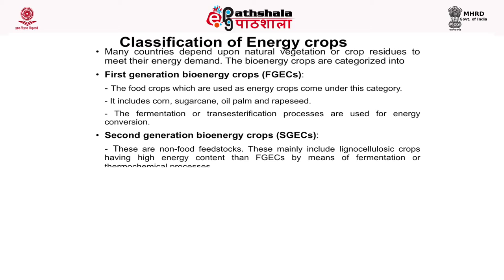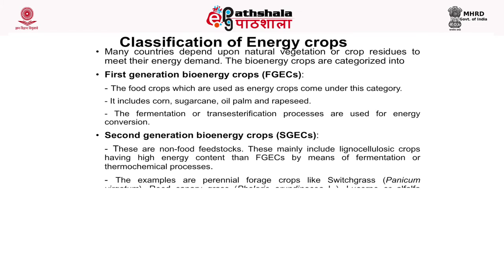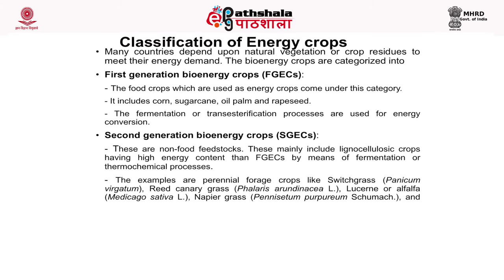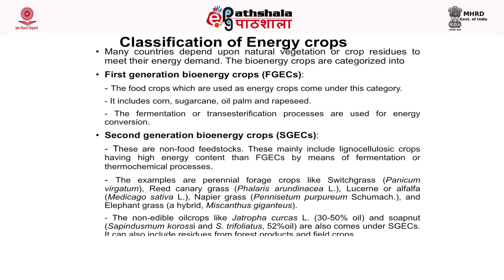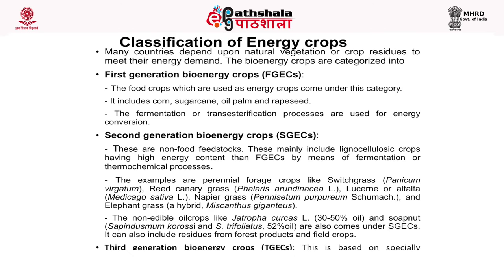First generation bioenergy crops (FGBCs): food crops used as energy crops come under this category. It includes maize (corn), sugarcane, oil palm, and rapeseed. Fermentation or transesterification processes are used for energy conversion — fermentation for carbohydrate and starchy/sugar sources, and transesterification for oil seed crops.